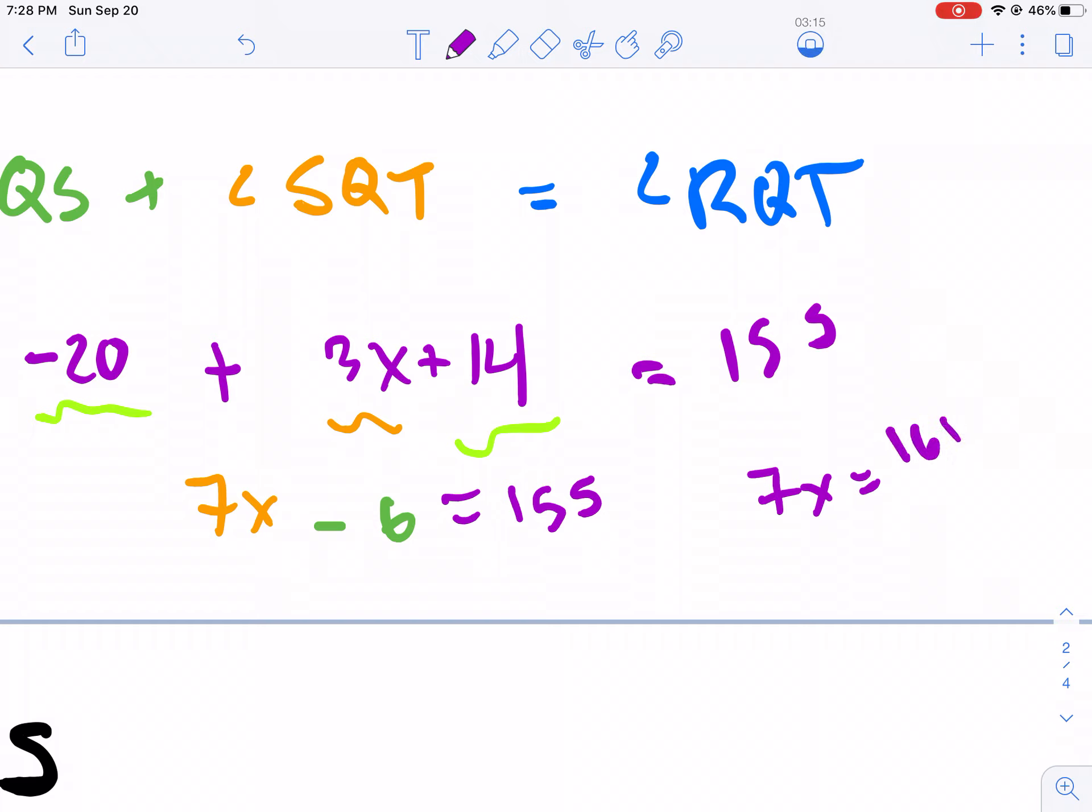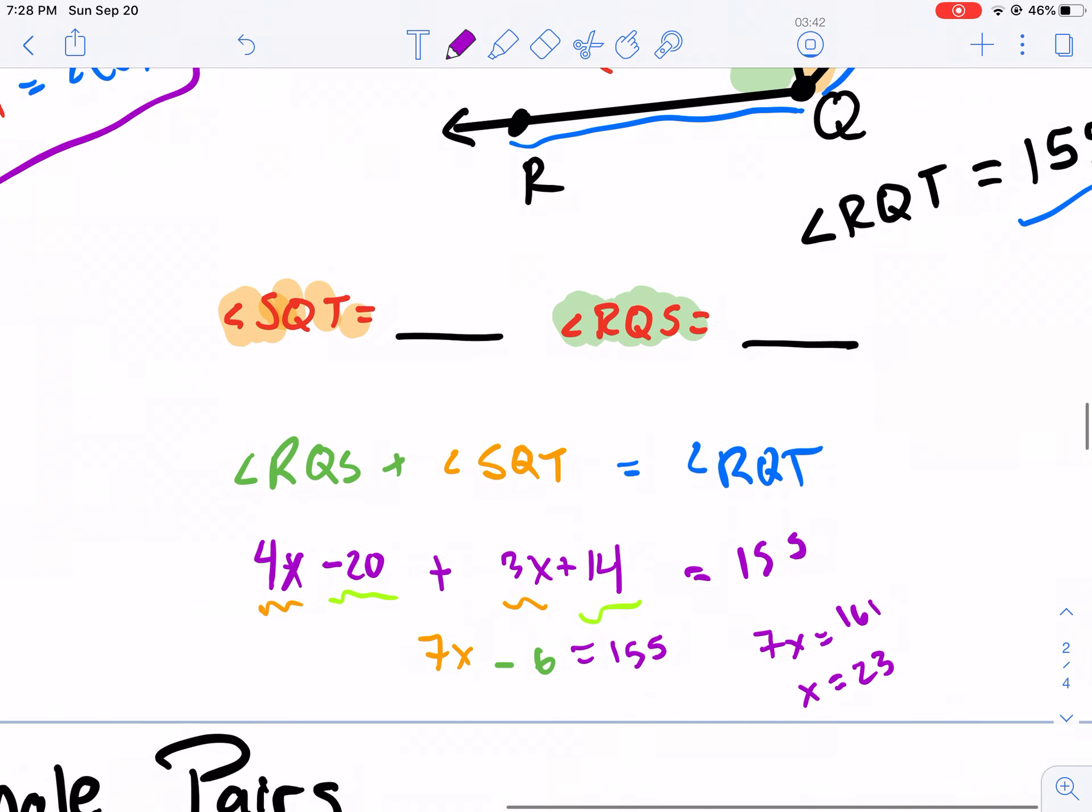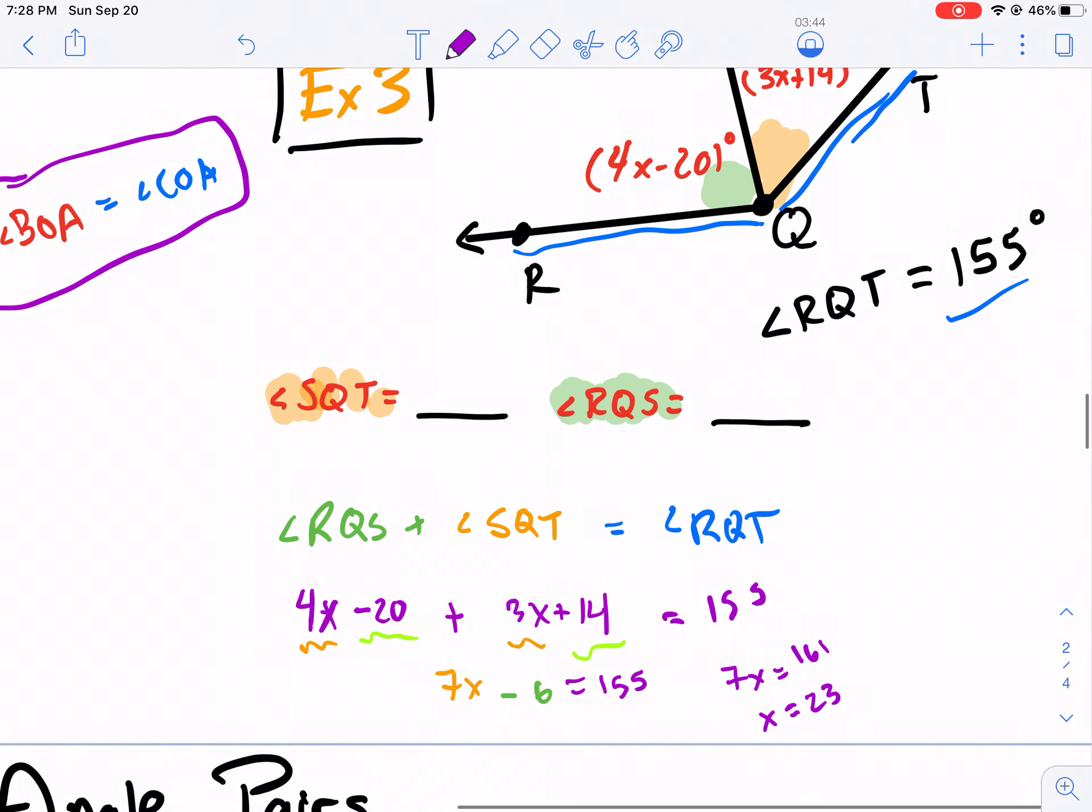I'm actually going to need a calculator here. So let me grab a calculator real quick. So I have 161 divided by 7. So I get X equals 23. But that's not the answer. Do not stop there. We still need to find RQS, the angle measure, and SQT. So what I need to do here is I need to plug X equals 23 into both of these.